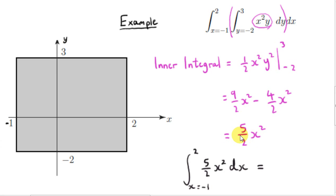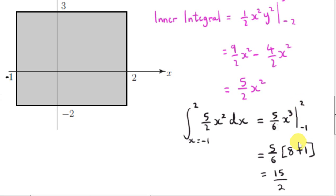Notice again that we just have a function of x, because we integrated a function of x and y with respect to y. Now we deal with the outer integral: we integrate 5 halves x squared with respect to x from x equals minus 1 to 2. Plugging in the limits gives 15 over 2 for the final answer.